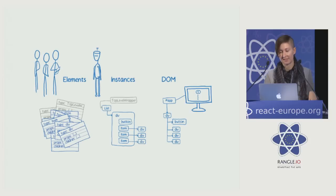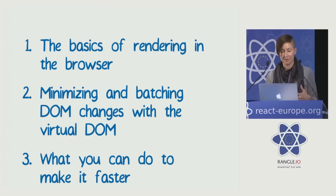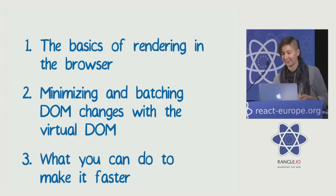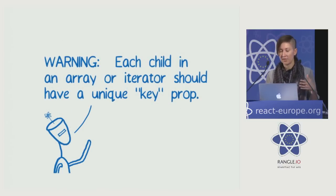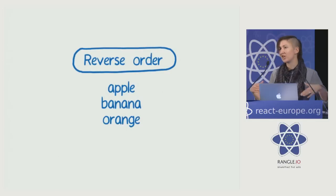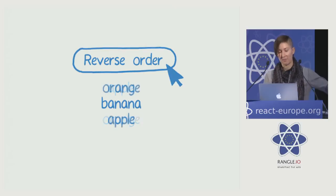There's still a good amount of work happening here — how can we reduce this? That brings us to the third part of the talk: what techniques you can use to make React even faster. The first technique is one that you probably already know because React tells you. Whenever you're creating an array of children using something like map, it's going to tell you that you should be using keys for those children. I want to show you why this helps.